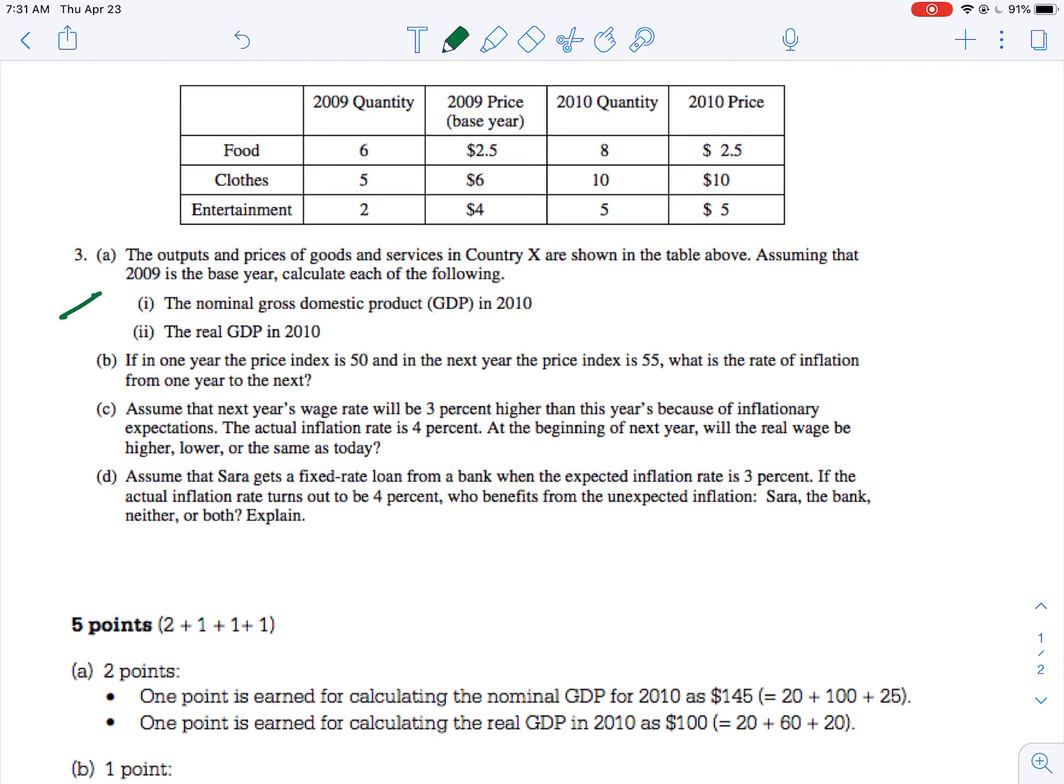Okay, so I'm looking at A. Output prices and goods of country X are in this table here. Assume that 09 is the base year, which means that that's going to be a very important time. We're going to figure some things out. So nominal GDP - we know that GDP is really P times Q. I should say nominal GDP is P times Q. So here is our Q and here is our P. So we've got three different categories, right?